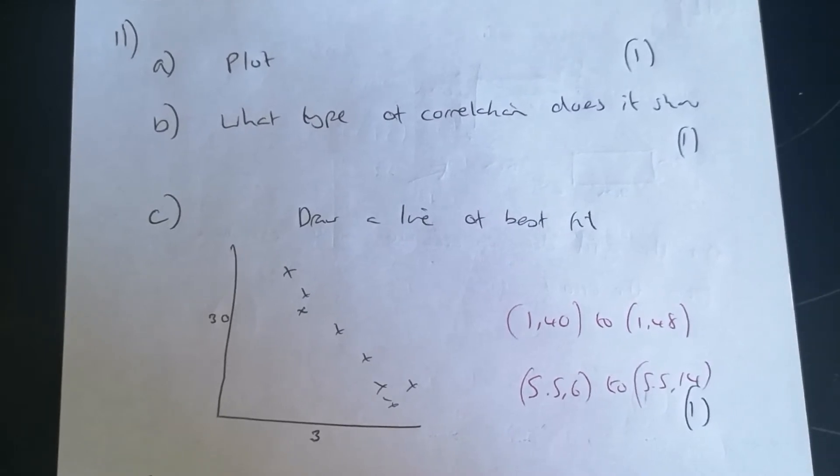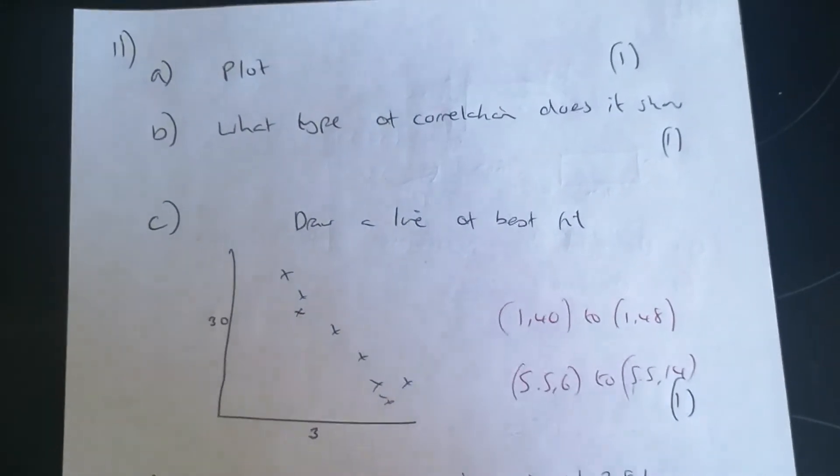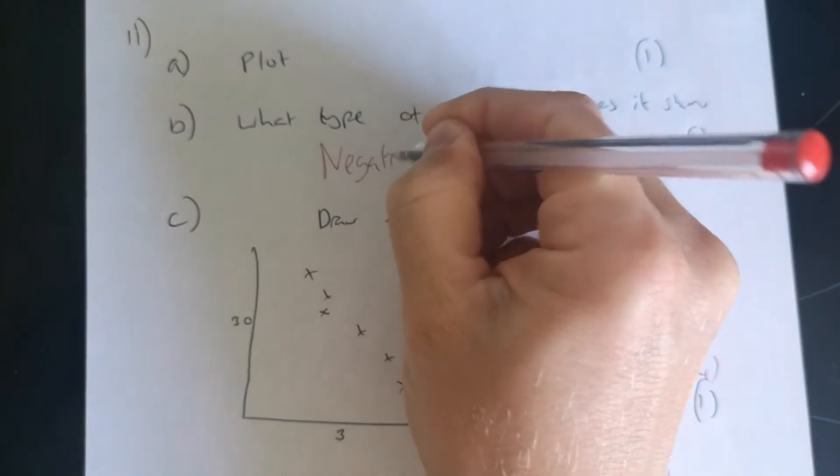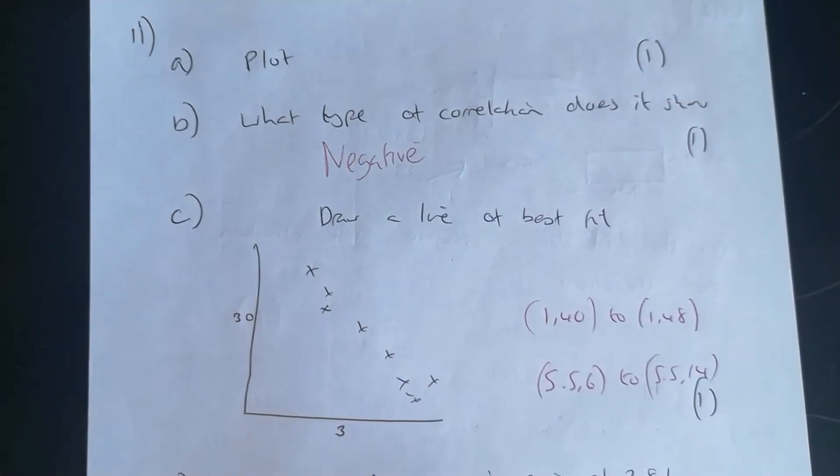Part B, what type of correlation does it show? Now it's a negative correlation. Okay, so all you need to write in there, negative would be the mark.